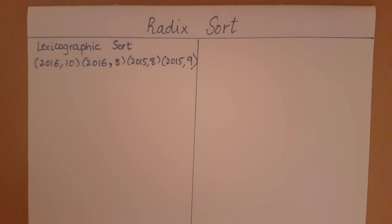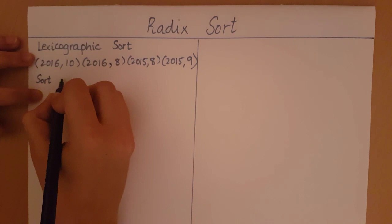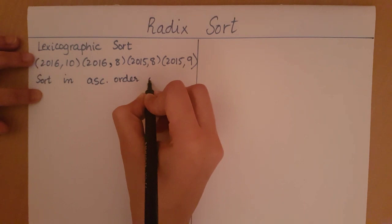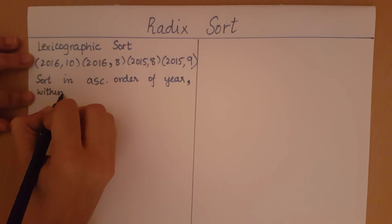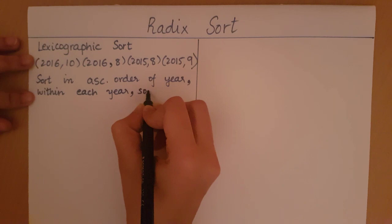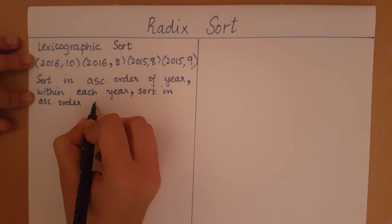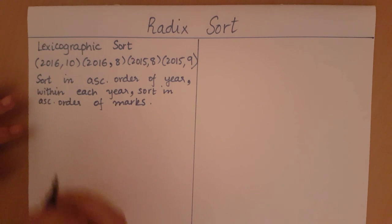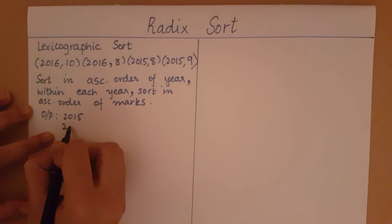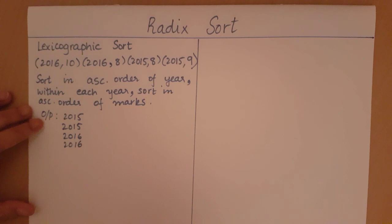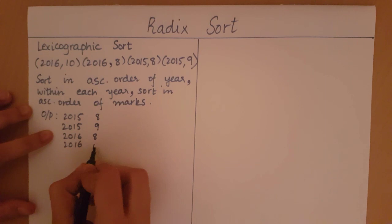Now let's say I want it sorted in ascending order of year, and within each year I want it sorted in ascending order of marks. So when we want our output, we want first all the 2015 entries and then the 2016 entries. Within 2015 we want the marks in ascending order. So this is what our output should look like.